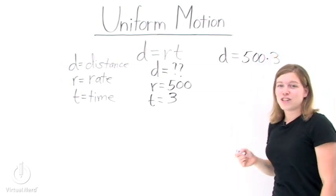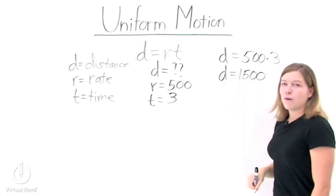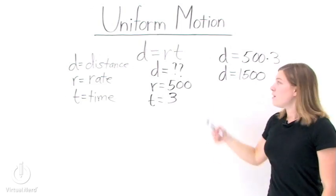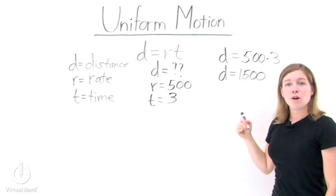Now to find d, just simplify. We have d equals 1,500. Well, 1,500 what? This is a distance, so we have to remember to put units on our answer. We're talking about miles.